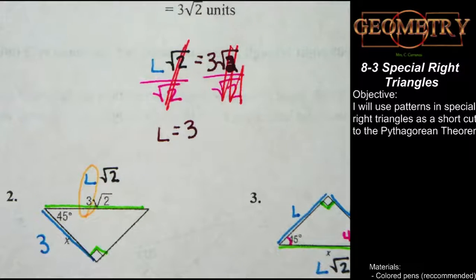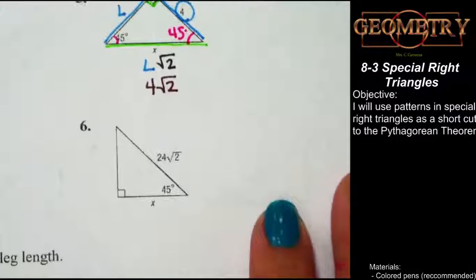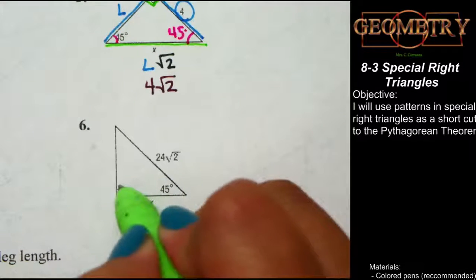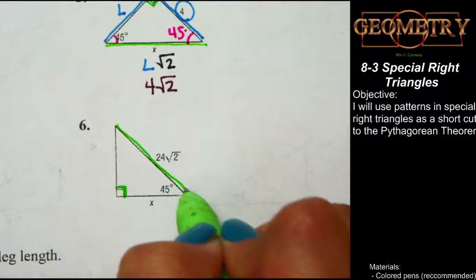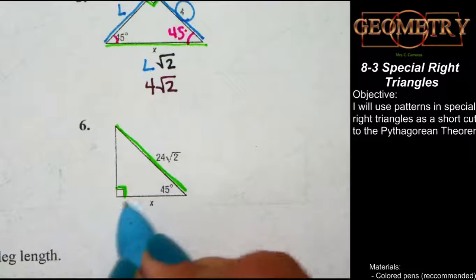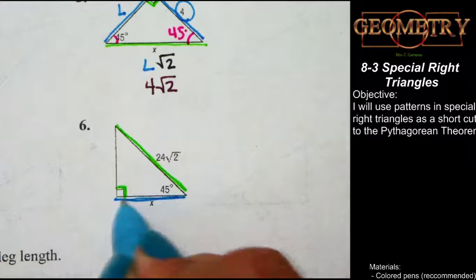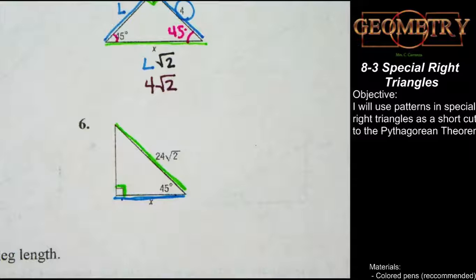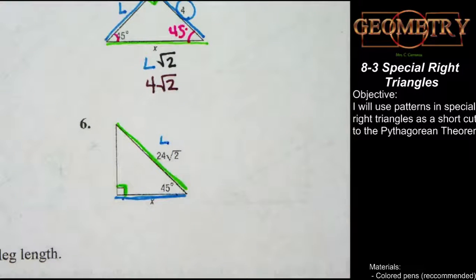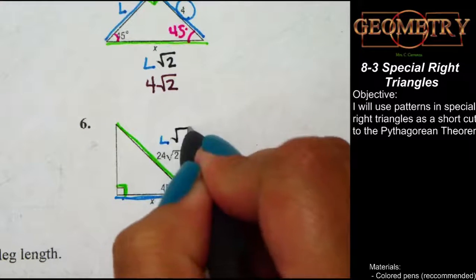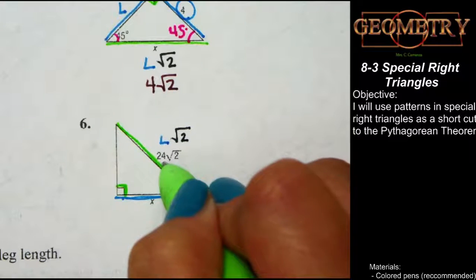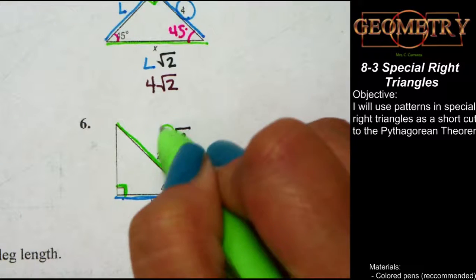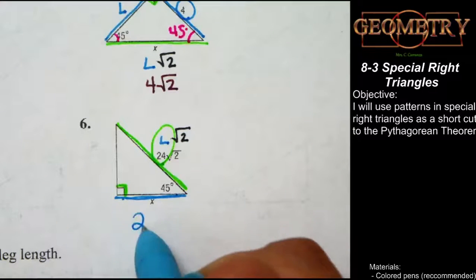We're going to skip over to number six and try to do this one more or less in our heads. Find the right angle — there is your hypotenuse, and this is the measure of one of your legs. The pattern says the hypotenuse equals the leg times the square root of two. The hypotenuse is given as 24 times the square root of two, so the measure of the leg must be 24.